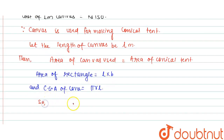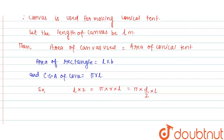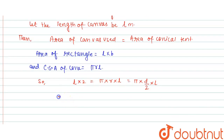So L into width (2 meter): L × 2 = π × r × l. Since diameter = 12 meter, radius = diameter ÷ 2. So this becomes: L × 2 = π × (d/2) × l. Now put in the values and divide both sides by 2.